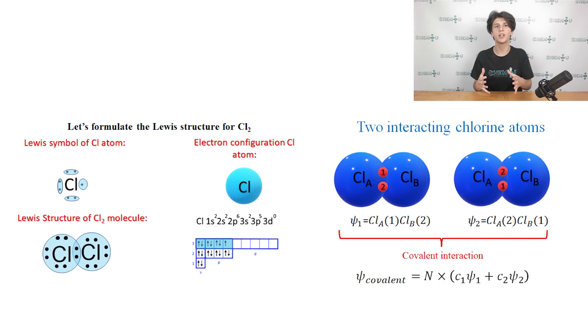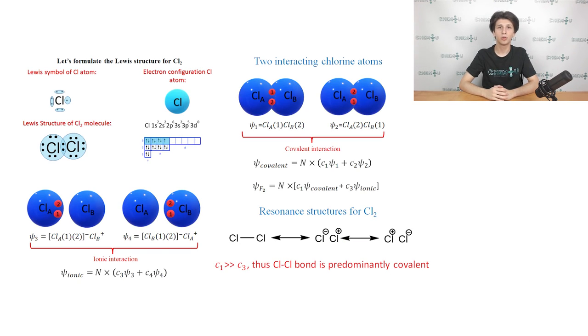This configuration can be described by the wave functions ψ1 and ψ2 that combine to form the ψ-covalent. As in the hydrogen molecule model, we can formulate the ionic configuration for the Cl2 molecule, and the corresponding wave functions are ψ3 and ψ4. Don't forget the resonance arrow between the resulting resonance structures. Of course, we assume from our previous knowledge that the covalent configuration will predominate compared to the ionic configurations. This is reflected by the relation of the coefficients that are highlighted on the screen now.